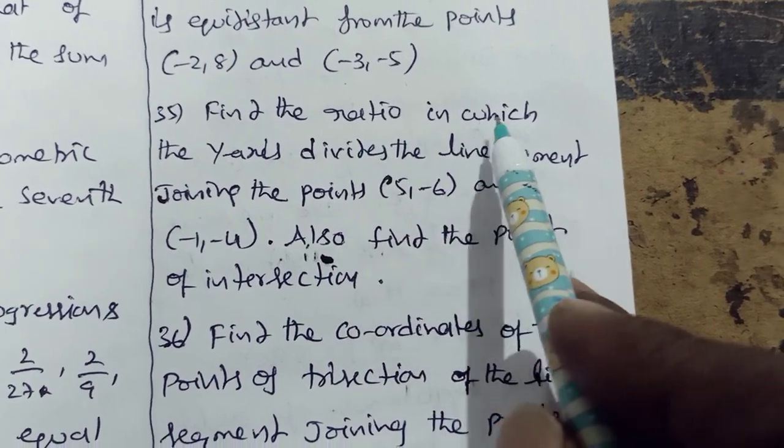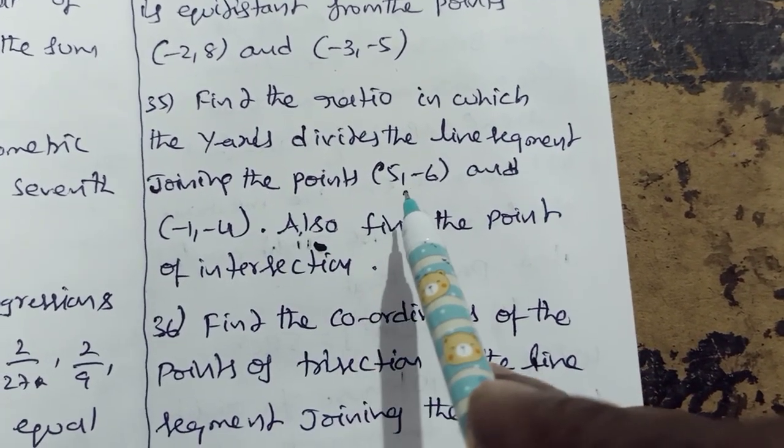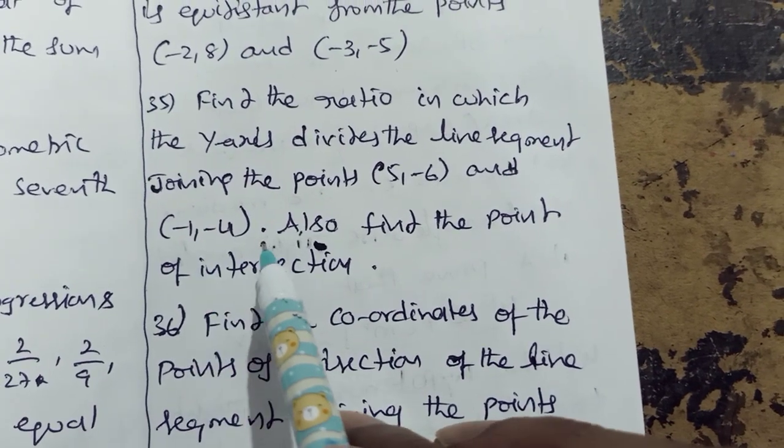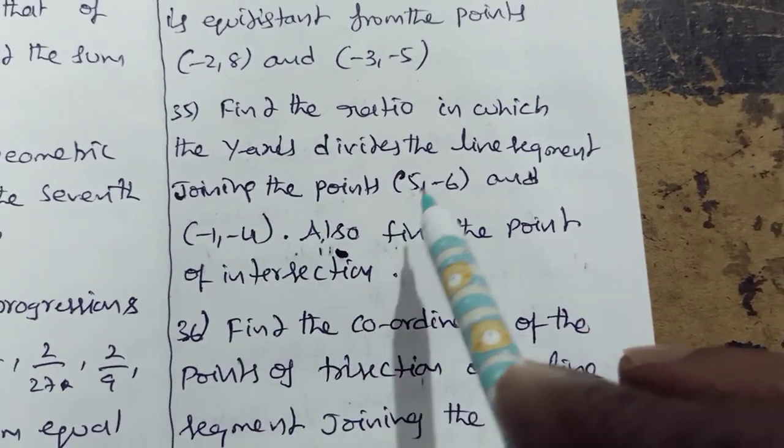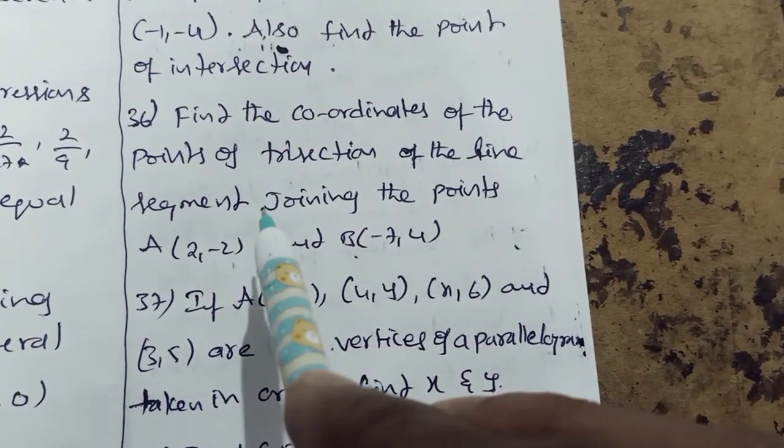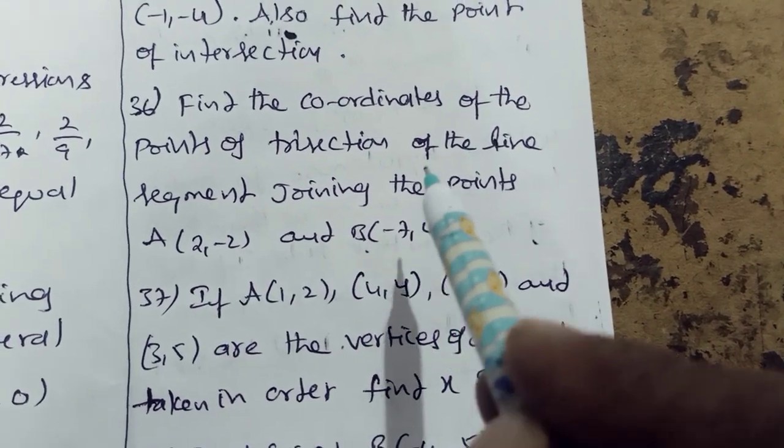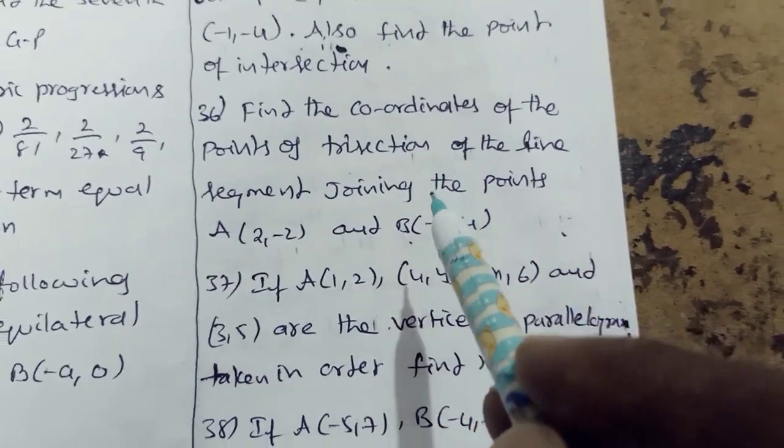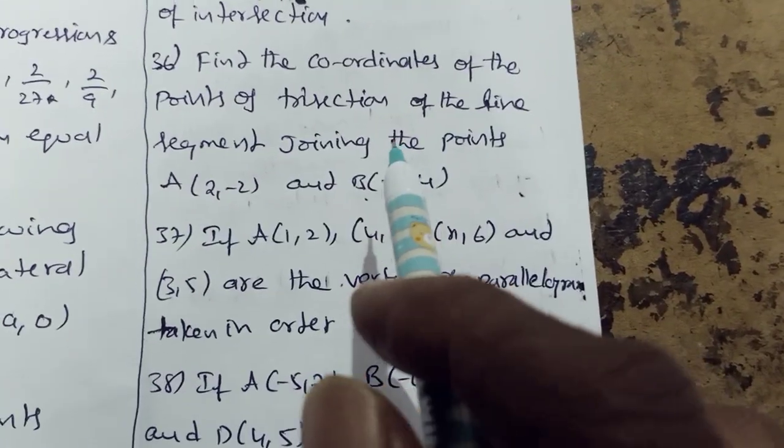Find the ratio in which y-axis divides the line segment joining the points 5 minus 6 and minus 1 minus 4. Also find the point of intersection. Find the coordinates of the points of trisection of the line segment joining the points a 2 minus 2 and b minus 7 4. This is a most repeated question.